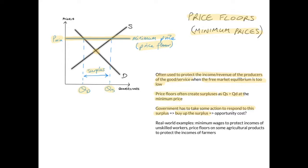Real-world examples of price floors include minimum wages, which are a price floor designed to protect the incomes of unskilled workers. There are also price floors applied to some agricultural products to protect the incomes of farmers.